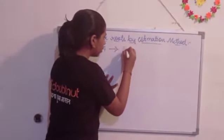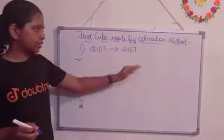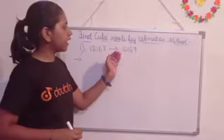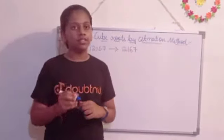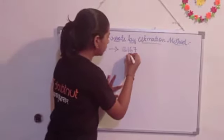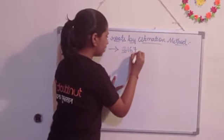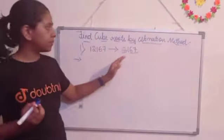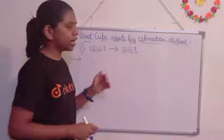1, 2, 1, 6, 7. So 12,167, and here we are going to divide it. The first three digits should be the first part and the leftover should be the second part. That is, 167 is one part and 12 is the second part. Got it?